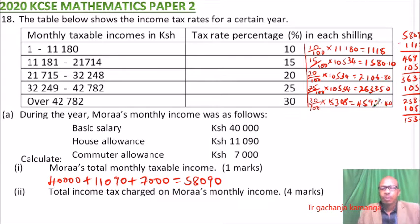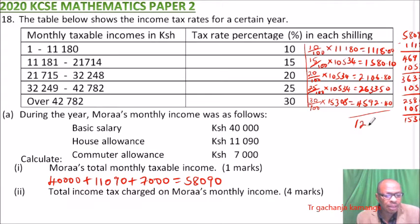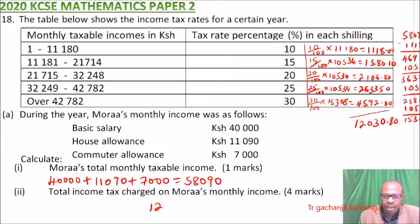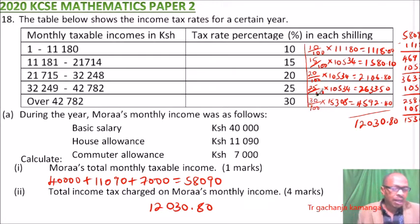To get the total income tax charged on Morales' monthly income, add all the tax amounts from each bracket. Using your calculator, the total comes to 12,030 and 80 cents. That is the total income tax. You have earned yourself five marks.